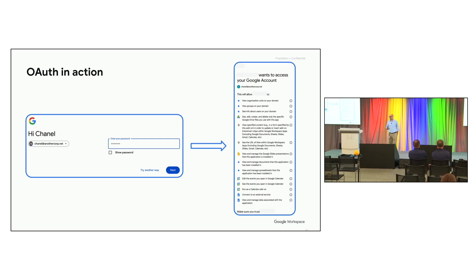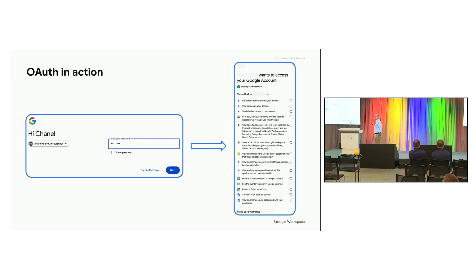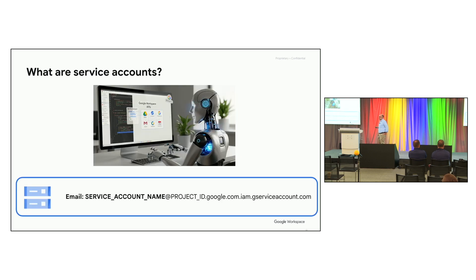That's the traditional way of authenticating. You build your OAuth consent screen, you show it to the user, you ask for permission, and based on the token you get back, you use that to call the APIs on their behalf. This is a sample of the Lucidchart consent screen — you can see all the permissions that show up. But if your application wants to do things on users' behalf or in the background, that's where you use a service account.